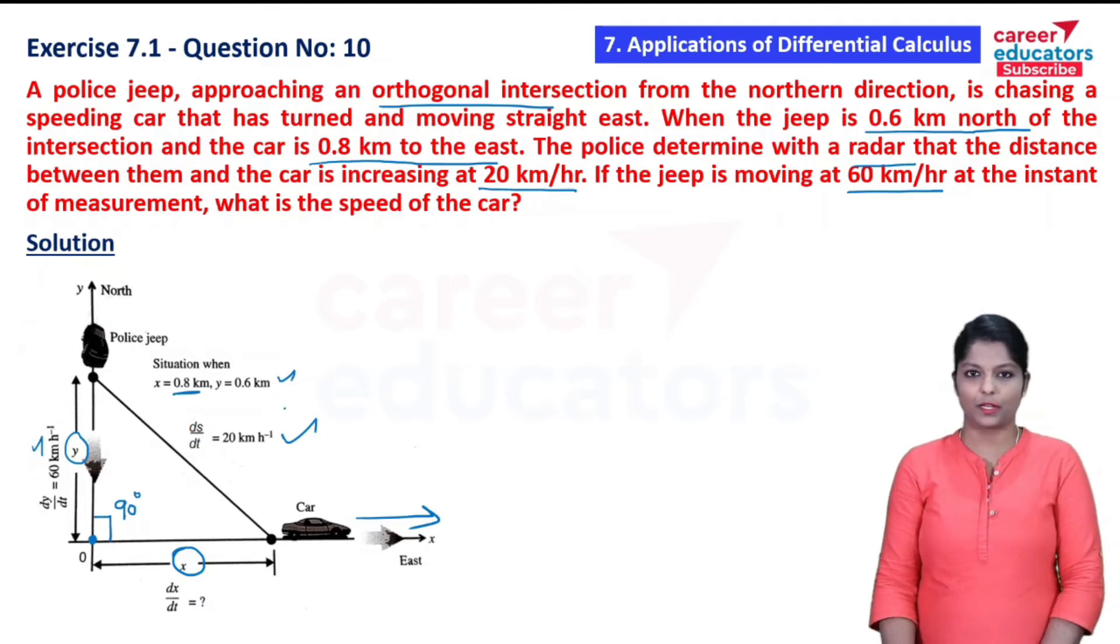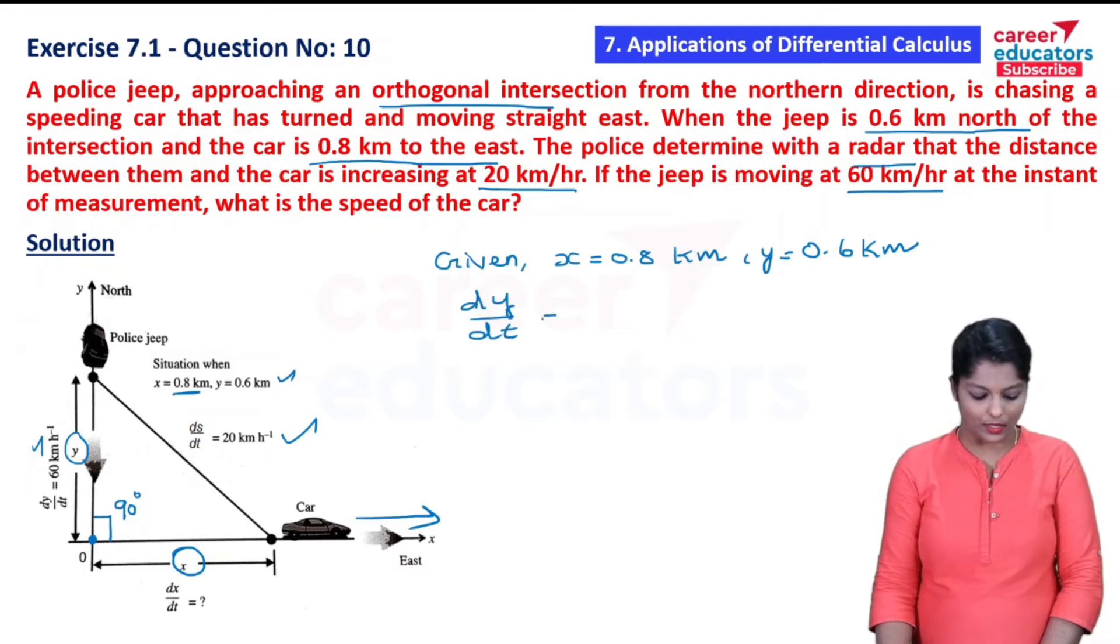The first step: write down what is given in the question. Given: x equal to 0.8 km, y equal to 0.6 km, dy by dt equal to minus 60 km per hour. dy by dt is negative